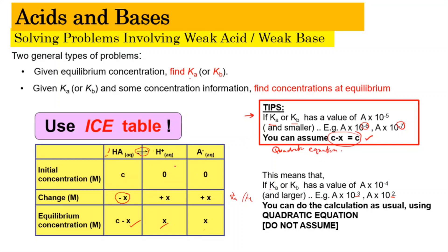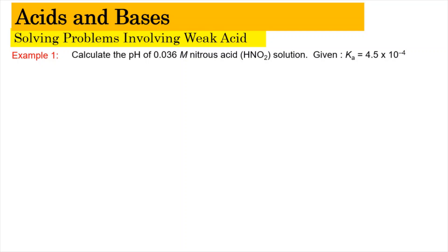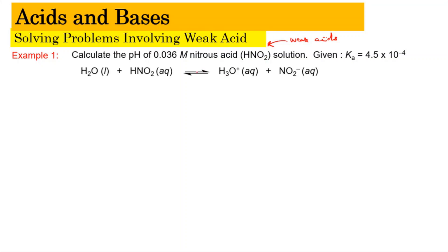To understand how to apply this ICE table and the tips, let us look into the example. For example number 1, we need to calculate the pH of a 0.036 M nitrous acid HNO2 solution. The Ka value is given as 4.5 × 10^(-4). HNO2 is an example of a weak acid. We write the dissociation equation: HNO2(aq) + H2O(l) ⇌ H3O⁺(aq) + NO2⁻(aq), where one hydrogen is transferred into H2O to form H3O⁺. Since the question asks for pH, we need to find the concentration of H3O⁺ at equilibrium, so we use the ICE table.